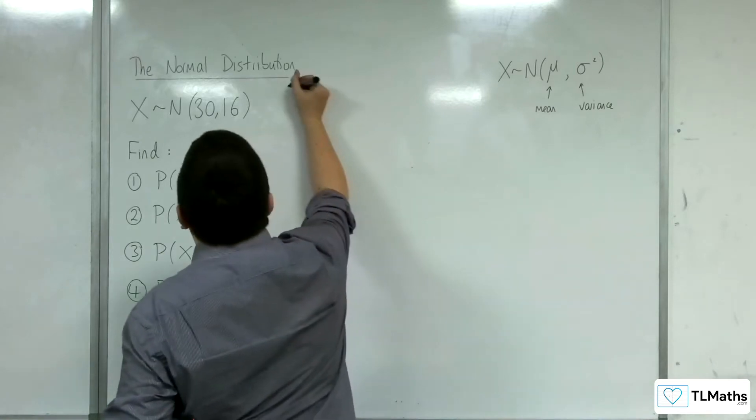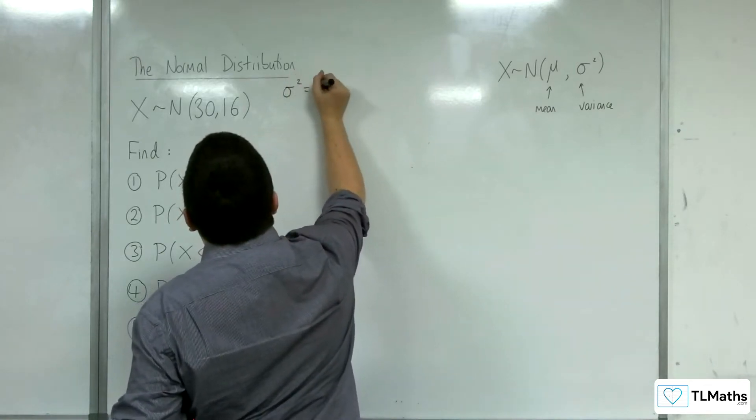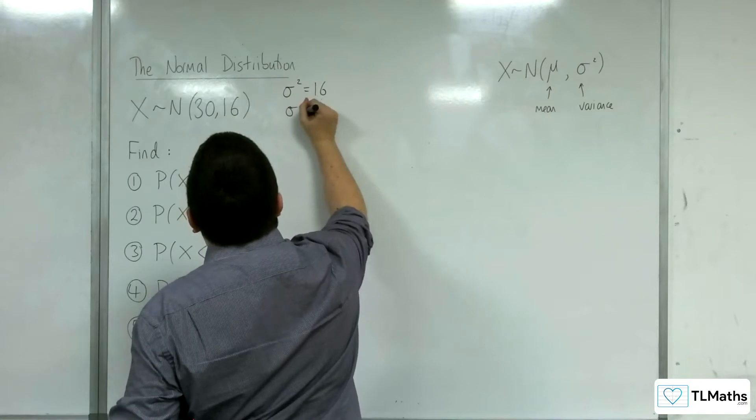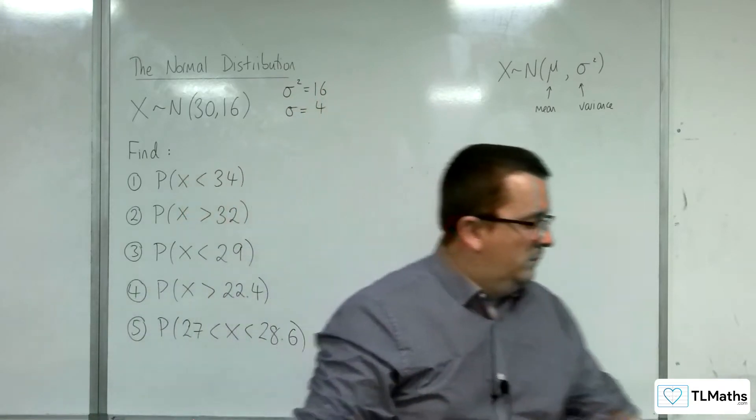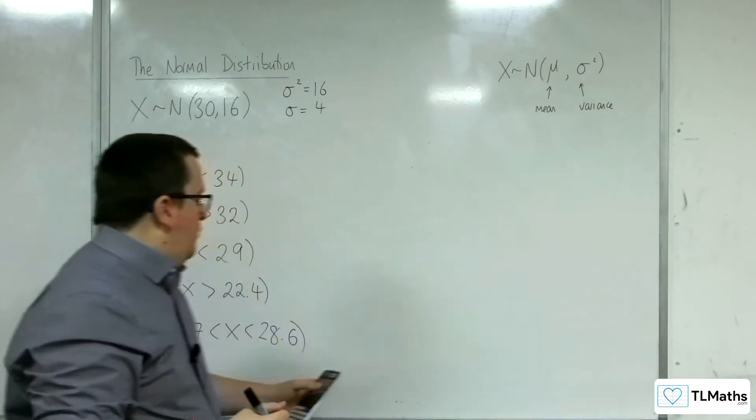So because the variance is given to you, that means that the standard deviation must be the square root of 16, so 4. So let's dive straight in, shall we?